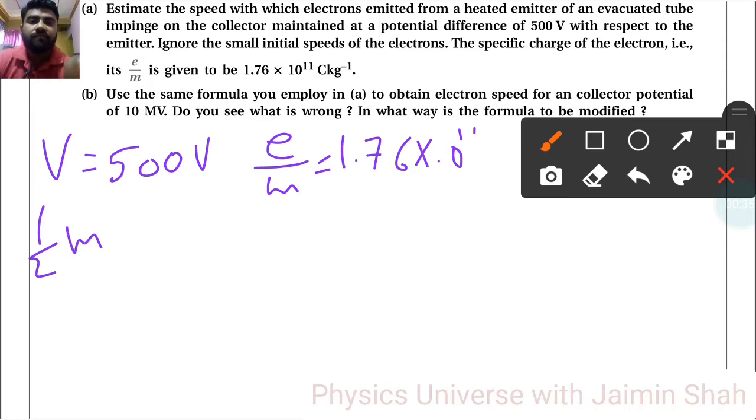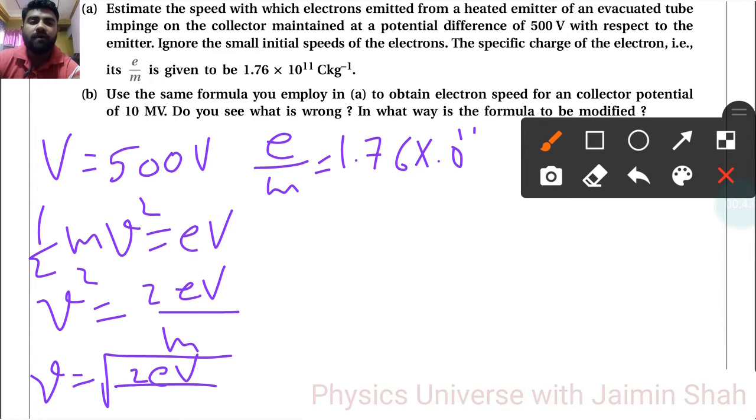We know that half mv square is equal to eV. So, V square is equal to 2eV upon m. So, V is equal to under root 2eV upon m.